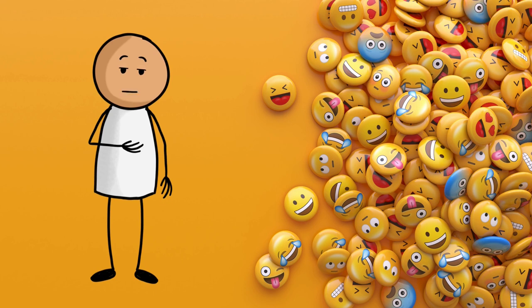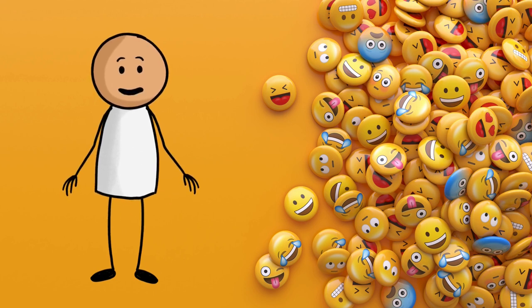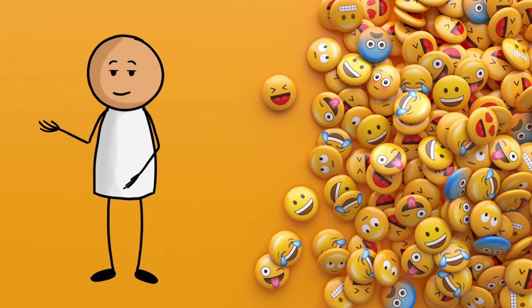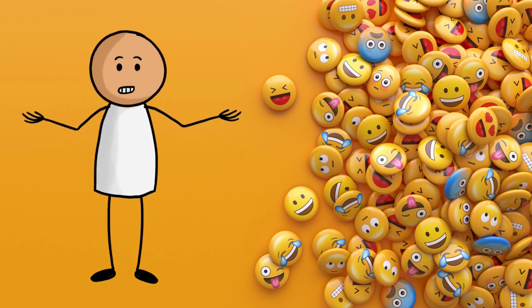Now we have emojis depicting everything from tears of joy to face palms. These visual cues allow us to express emotions that might be difficult to convey with text alone. A simple thumbs up can show approval, while a broken heart can communicate sadness. Emojis help us bridge the gap between written communication and emotional expression.